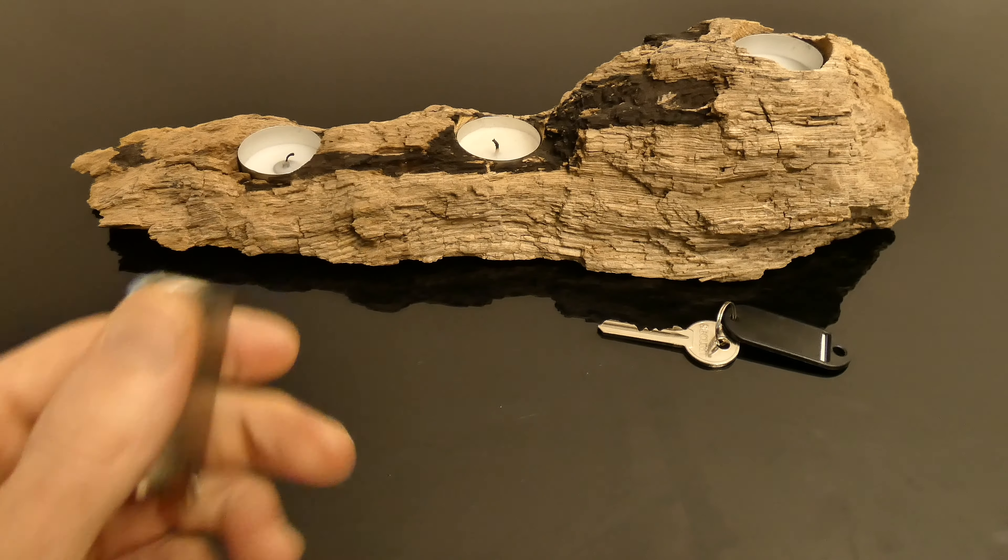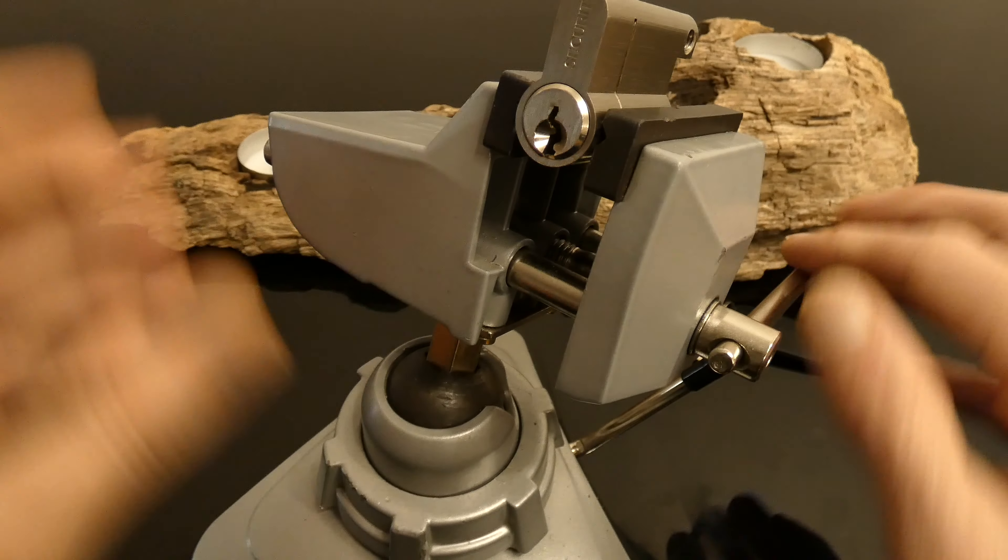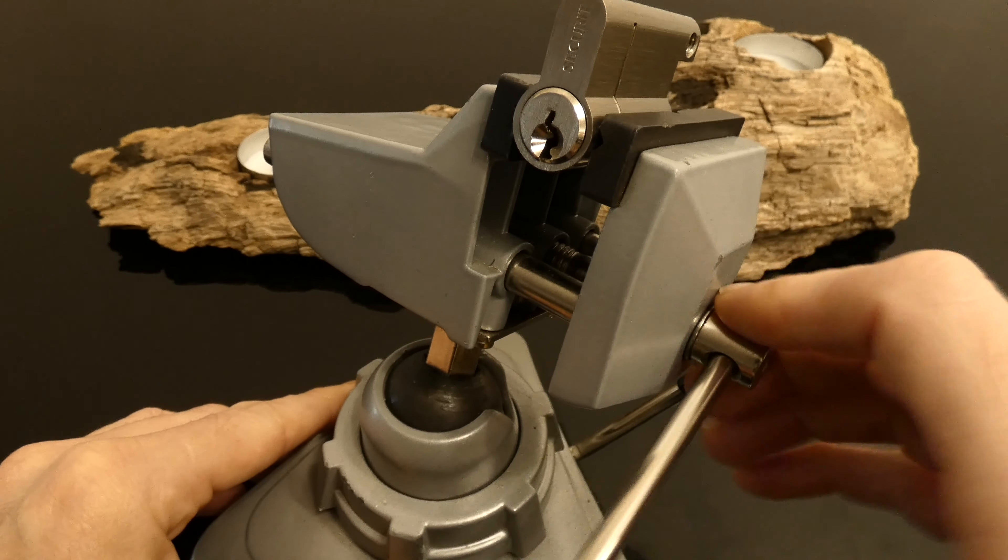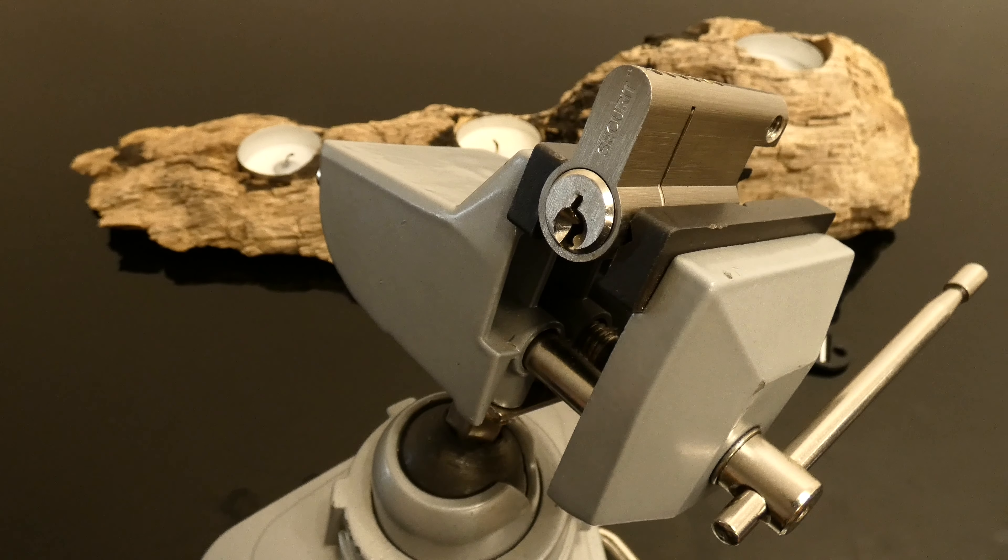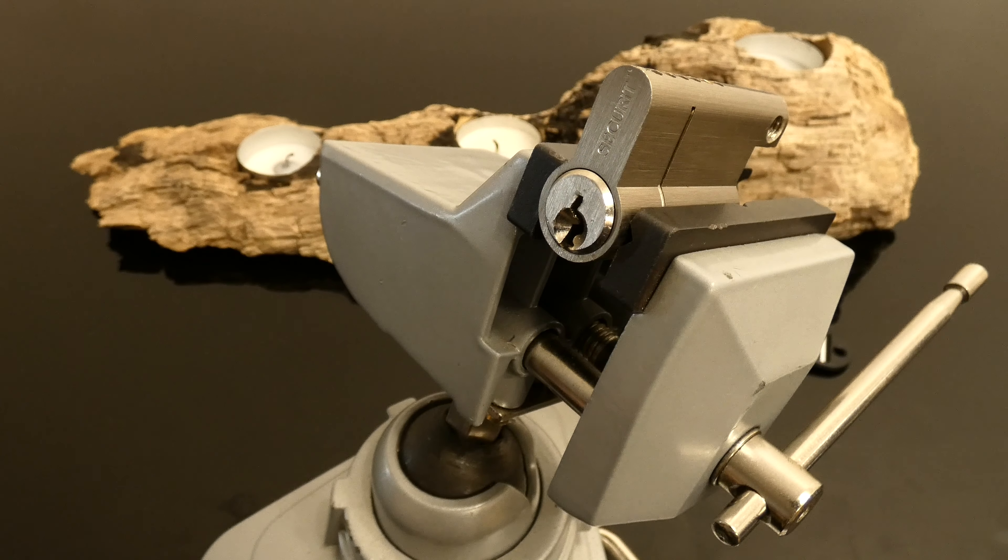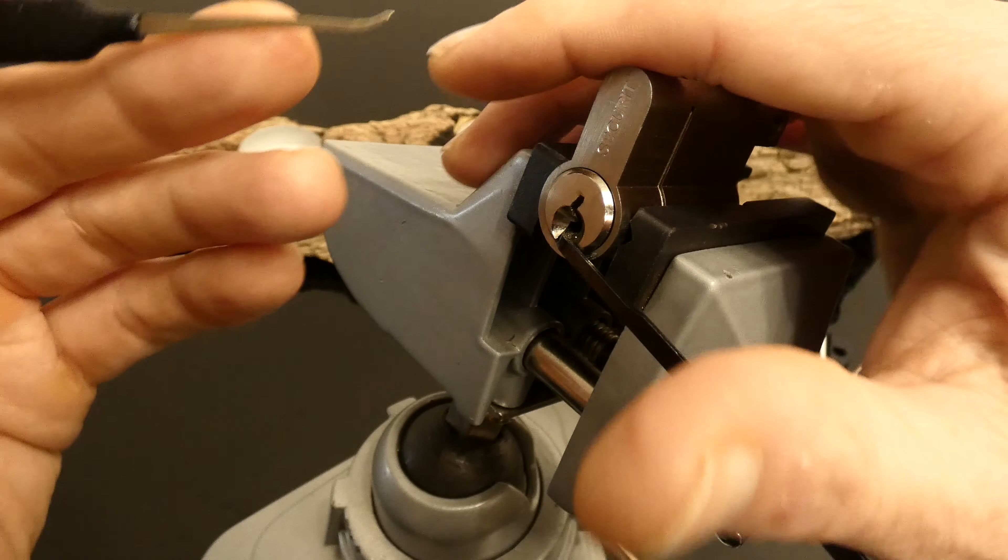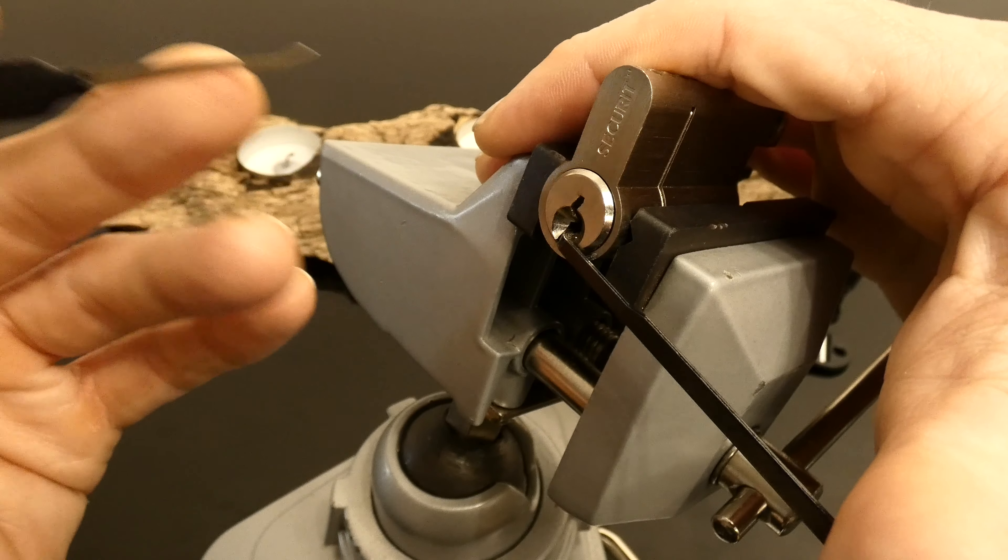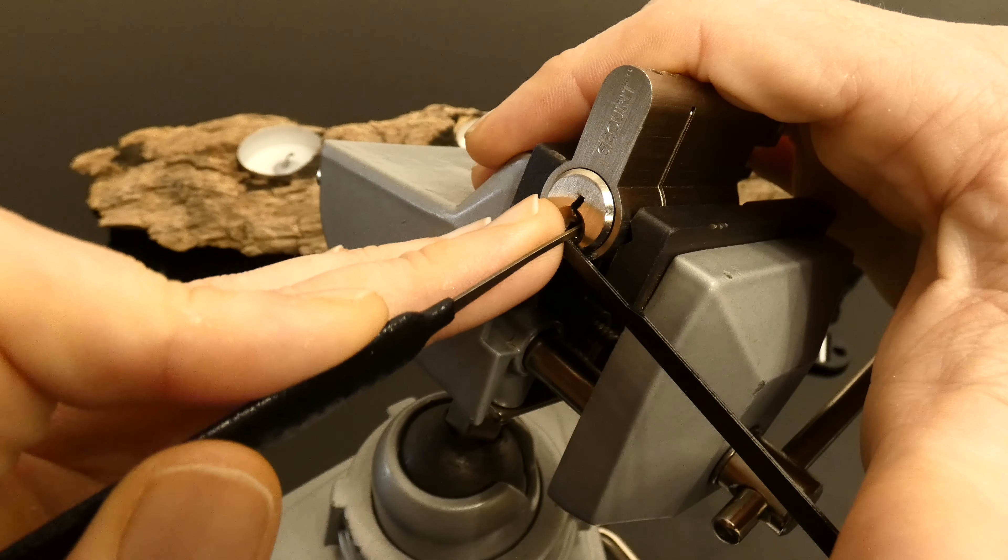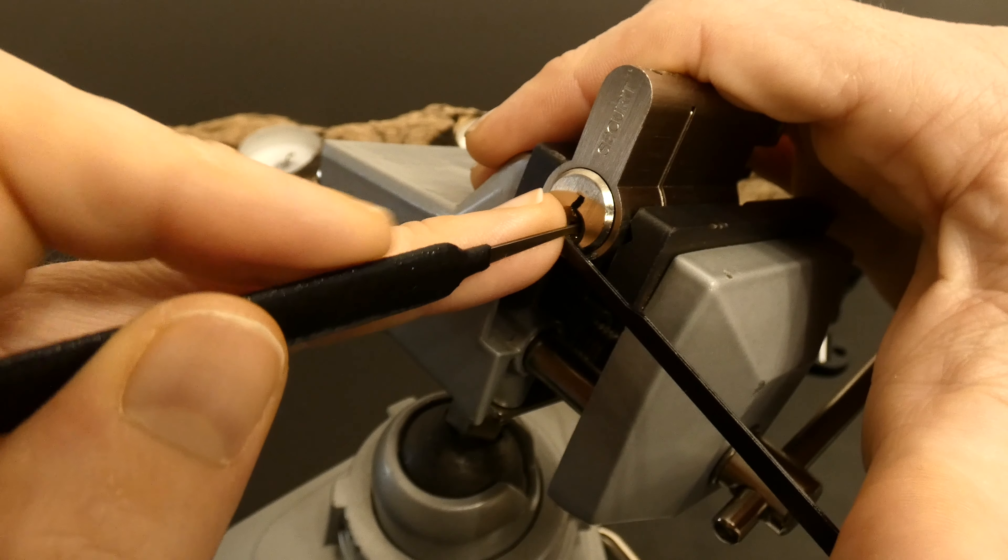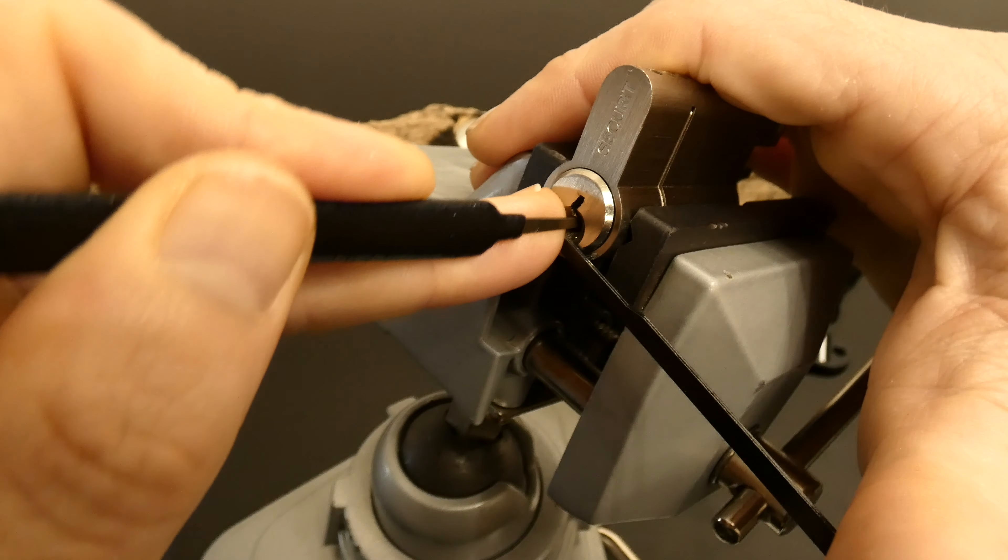Alright, grab that device and we'll try to get this open. Bottom of the keyway tension again, and this is just a Sparrows hook. Let's have a look. Let's get into the back first.